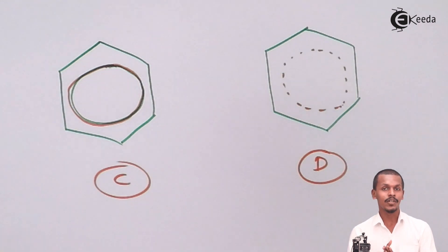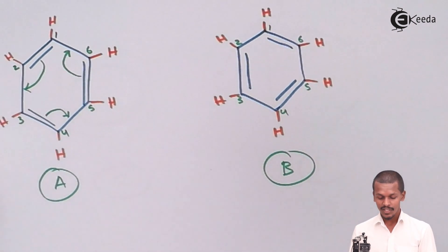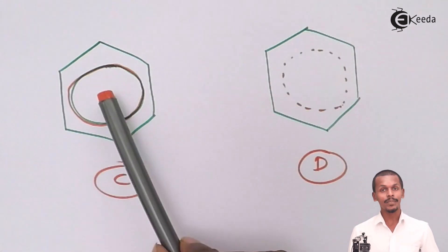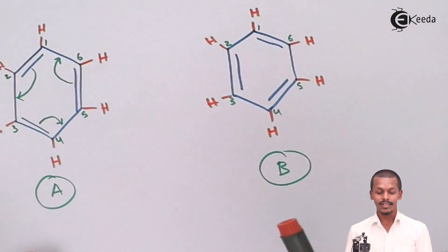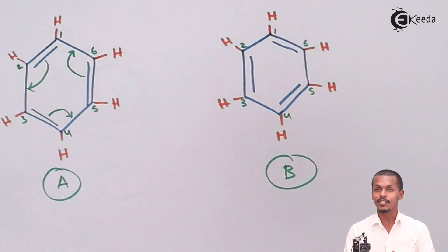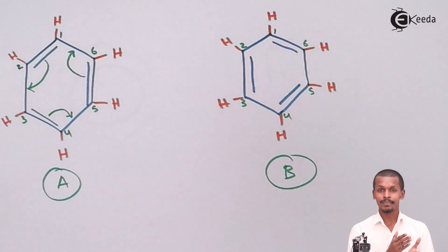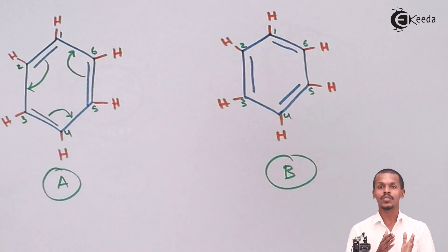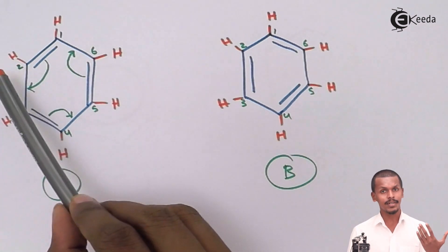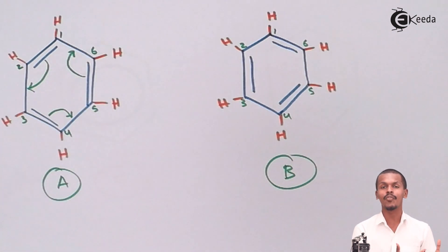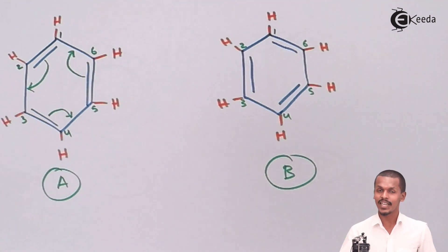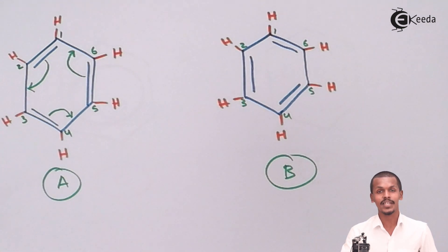This delocalization of electrons is basically known as resonance, and the resonating structures are also known as canonical structures. The resonance in benzene arises because of the pi electrons formed by the lateral overlapping of the p orbitals of the carbon atoms. Because a p orbital is present at every carbon atom, the lateral overlapping forms pi bonds, resulting in the delocalization of electrons. That is the resonance I was talking about. Thank you friends for watching; please share this video and subscribe to Ekita channel.